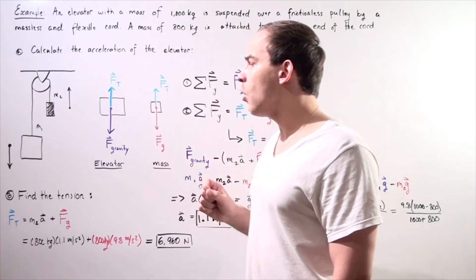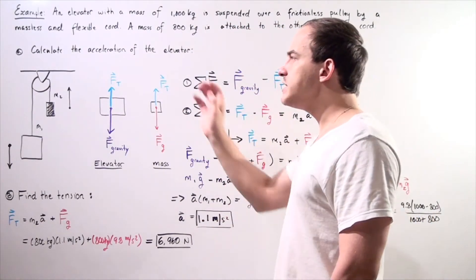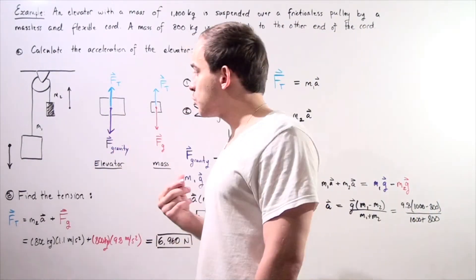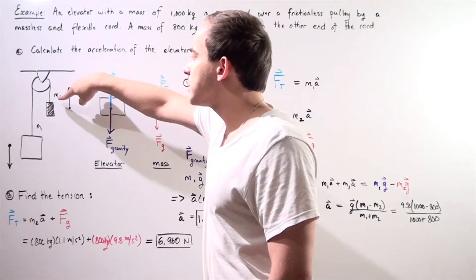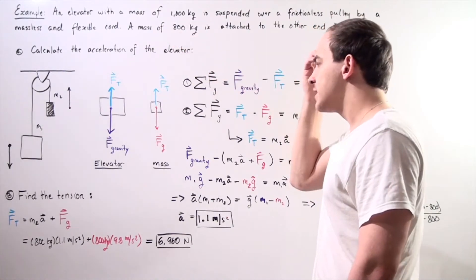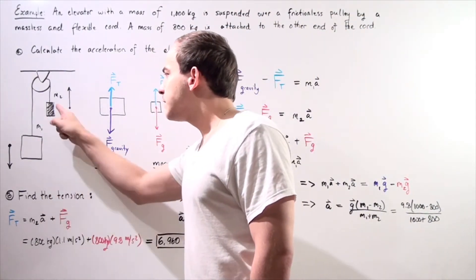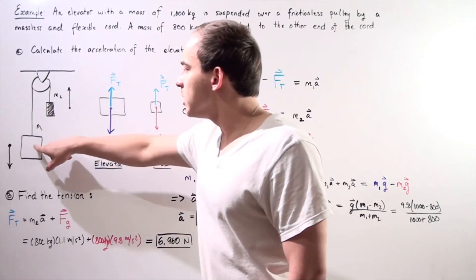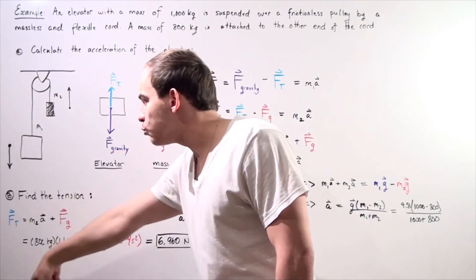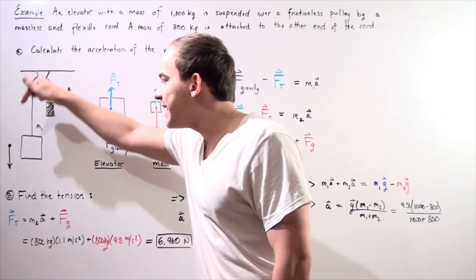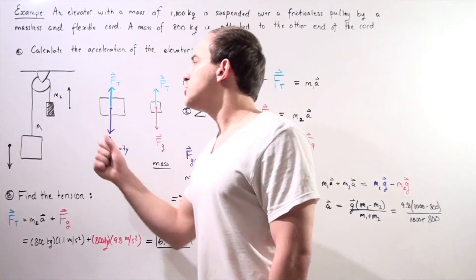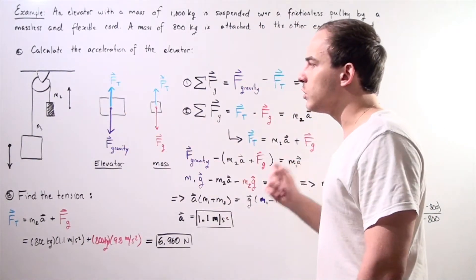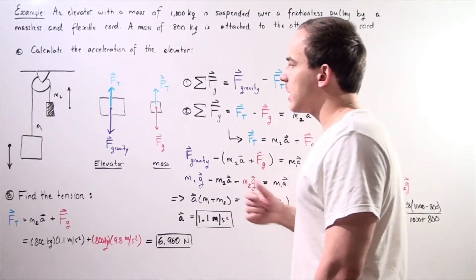We want to find the acceleration of the elevator in Part A and the tension in the cord in Part B. At any point along the cord, the force is exactly the same. Let's begin Part A by drawing the diagram for our system of objects. We have two objects, so we need two different force diagrams and two different equations.